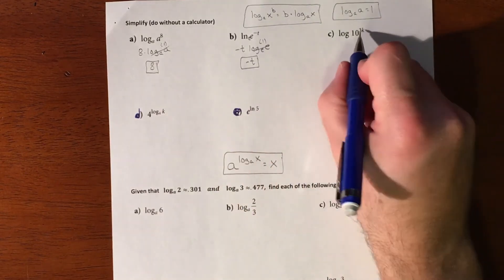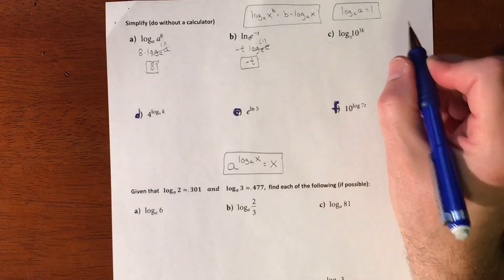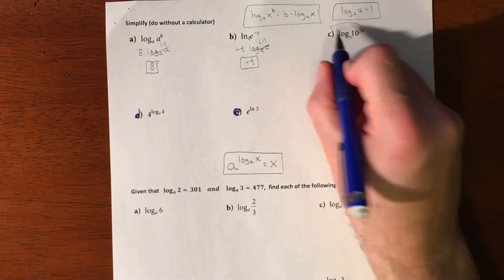And then here, log if you don't have a base on it, it is automatically a base 10. So those are matching, we'll pull the 3k off, and that becomes one. So log base 10 of 10 is one, so you're just left with 3k.